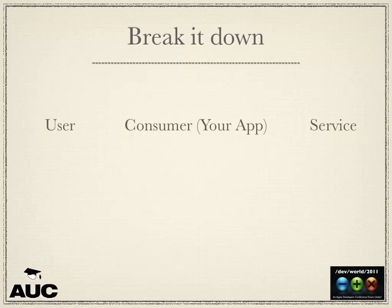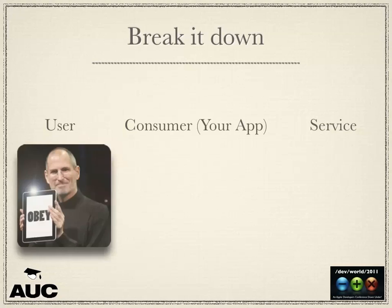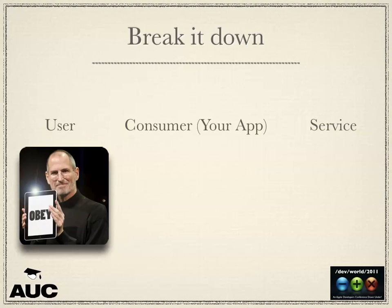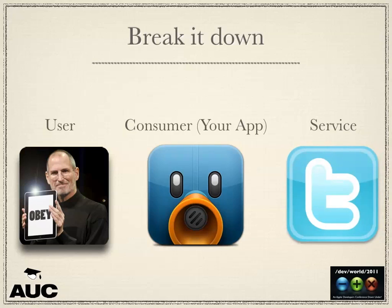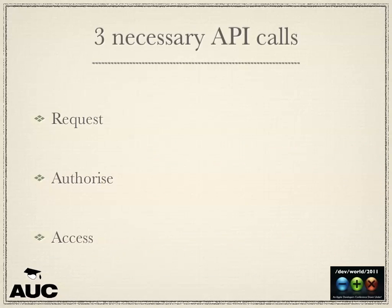OAuth is typically broken down into three different parts. You've got you as the user — just a person with a device. You've got your consumer, which is the application that either you or someone has developed. And you've got your service, which holds all the data and has control over it. With OAuth, there are three necessary API calls: it starts with a request, moves to authentication, and finally you get an access token which you can use to access all the data.